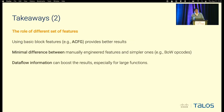The second takeaway is about different types of features. We found that annotated control flow graphs do provide benefit, but there is minimal difference between manually engineered features and simpler ones like bag-of-words or opcodes. This means expensive manually engineered features do not provide a big advantage in any of the test cases we evaluated. Also, data flow information is very interesting and can boost results for large functions.